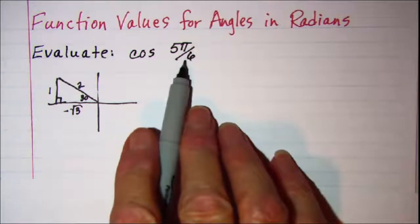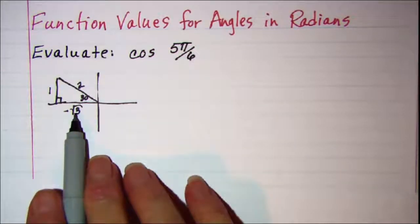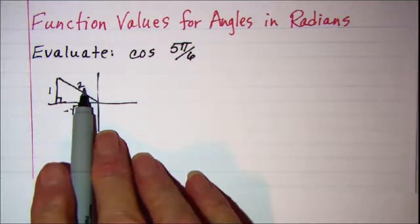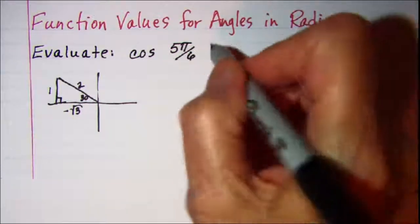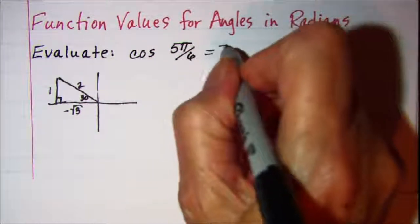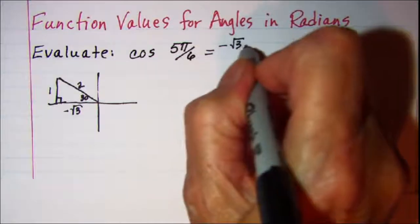Now for the cosine of this angle we want the adjacent over the hypotenuse. So my cosine of 5 pi over 6 is a negative root 3 over 2.